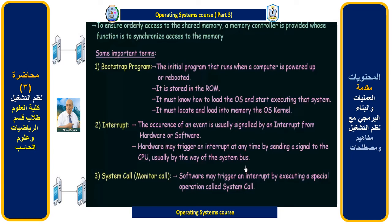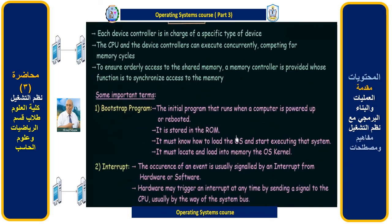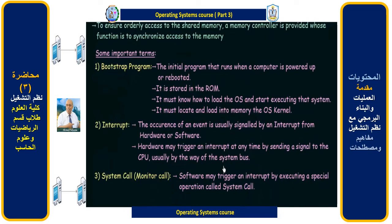I showed in the previous diagram what a bus is — this line represents the common bus. Similarly, using a system bus, hardware can send an interrupt to the CPU, and the CPU has to stop whatever it is doing and execute the interrupt. When a software triggers the interrupt by executing a special operation, that is known as a system call, also called a monitor call.